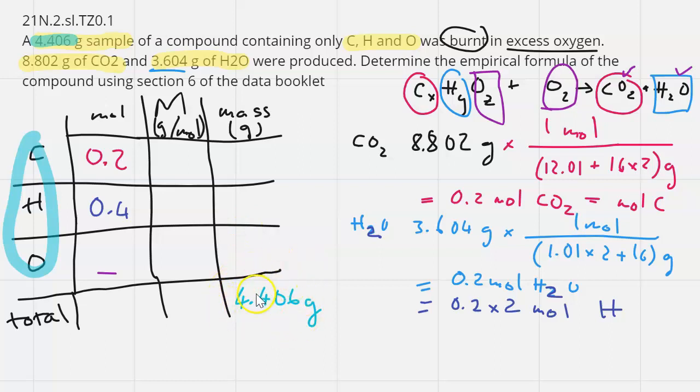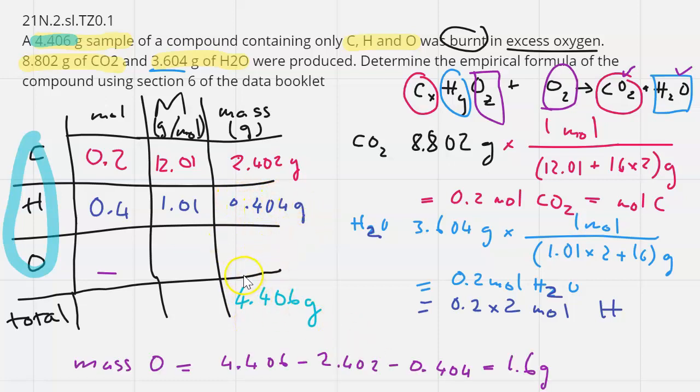Molar mass of carbon is 12.01 gram per mole, so mass of carbon when we put in the calculator, moles multiplied by molar mass, that would be 2.402 gram. For hydrogen is 0.404 gram, so we got 1.6 gram.